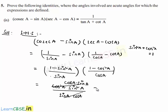Finally, the simplified form of LHS is cos a × sin a. Let us also find the simplified form of the right hand side.